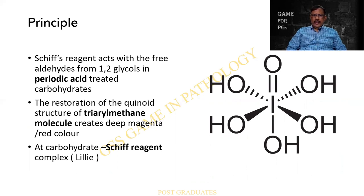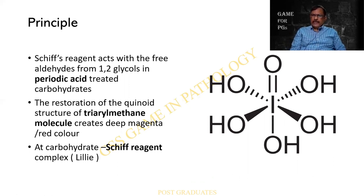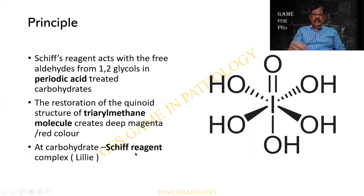Now we will go back to our PAS. The Schiff's reagent reacts with the free aldehydes from 1,2-glycols in the periodic acid treated carbohydrates. So the first step is treating it with periodic acid — it is periodic acid, after which it becomes colorless. Then there is a restoration of the triarylmethane molecule, which produces the pink, magenta, or red color by means of the Schiff's reagent. Two substances: periodic acid and the Schiff's reagent.